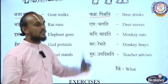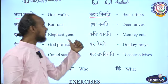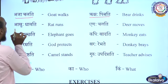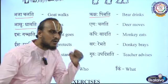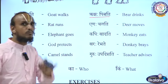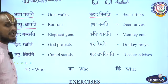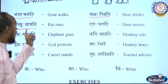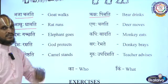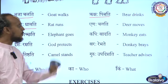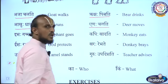The third sentence: Akhu Dhavati. What does Akhu mean? Akhu means rat. Dhavati means runs. So Akhu Dhavati means 'Rat runs.'